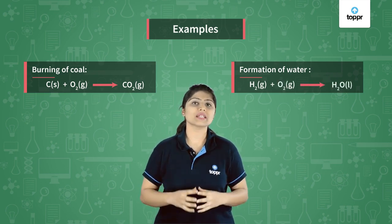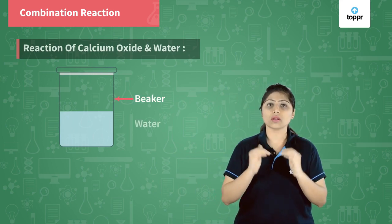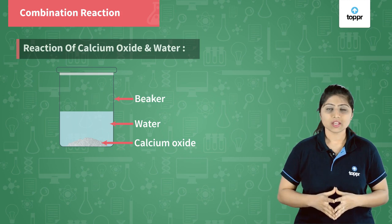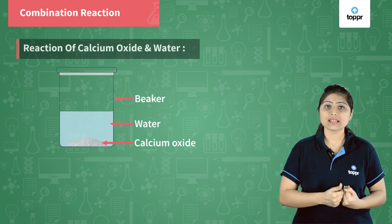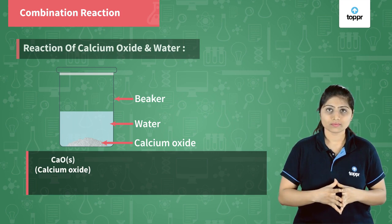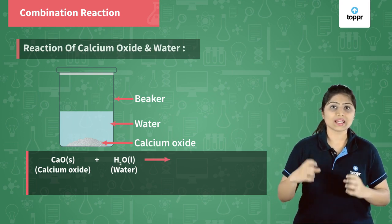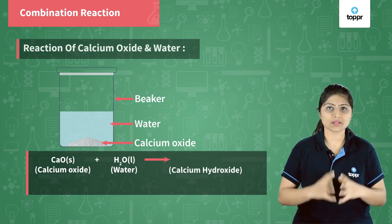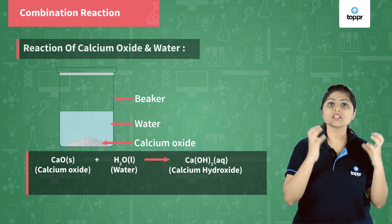Let us see one more example through an activity. We take a beaker of water and add calcium oxide to it. The reaction is written as: CaO + H₂O → calcium hydroxide. When you mix them, a new substance is formed. The formula of calcium hydroxide is Ca(OH)₂.